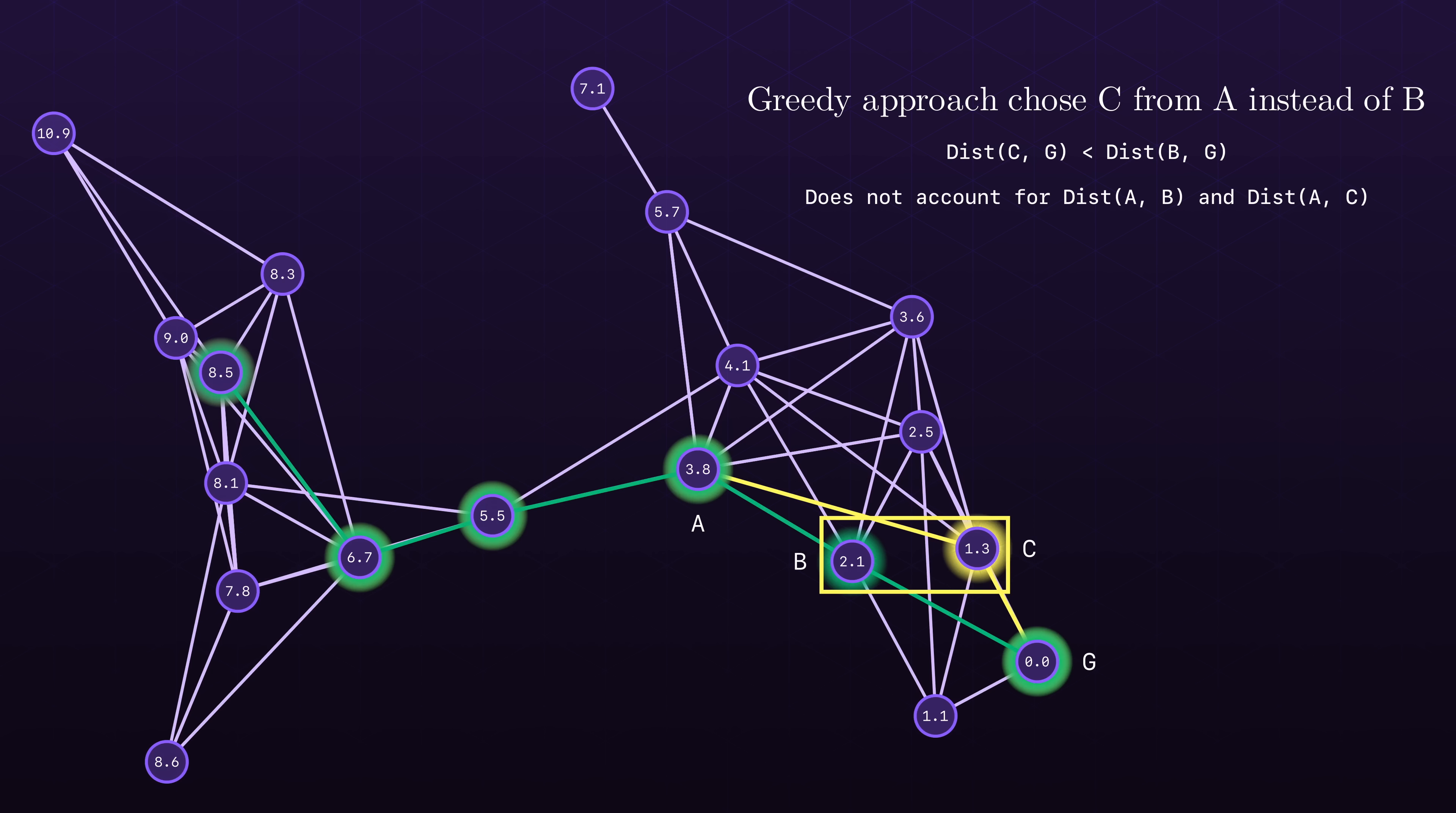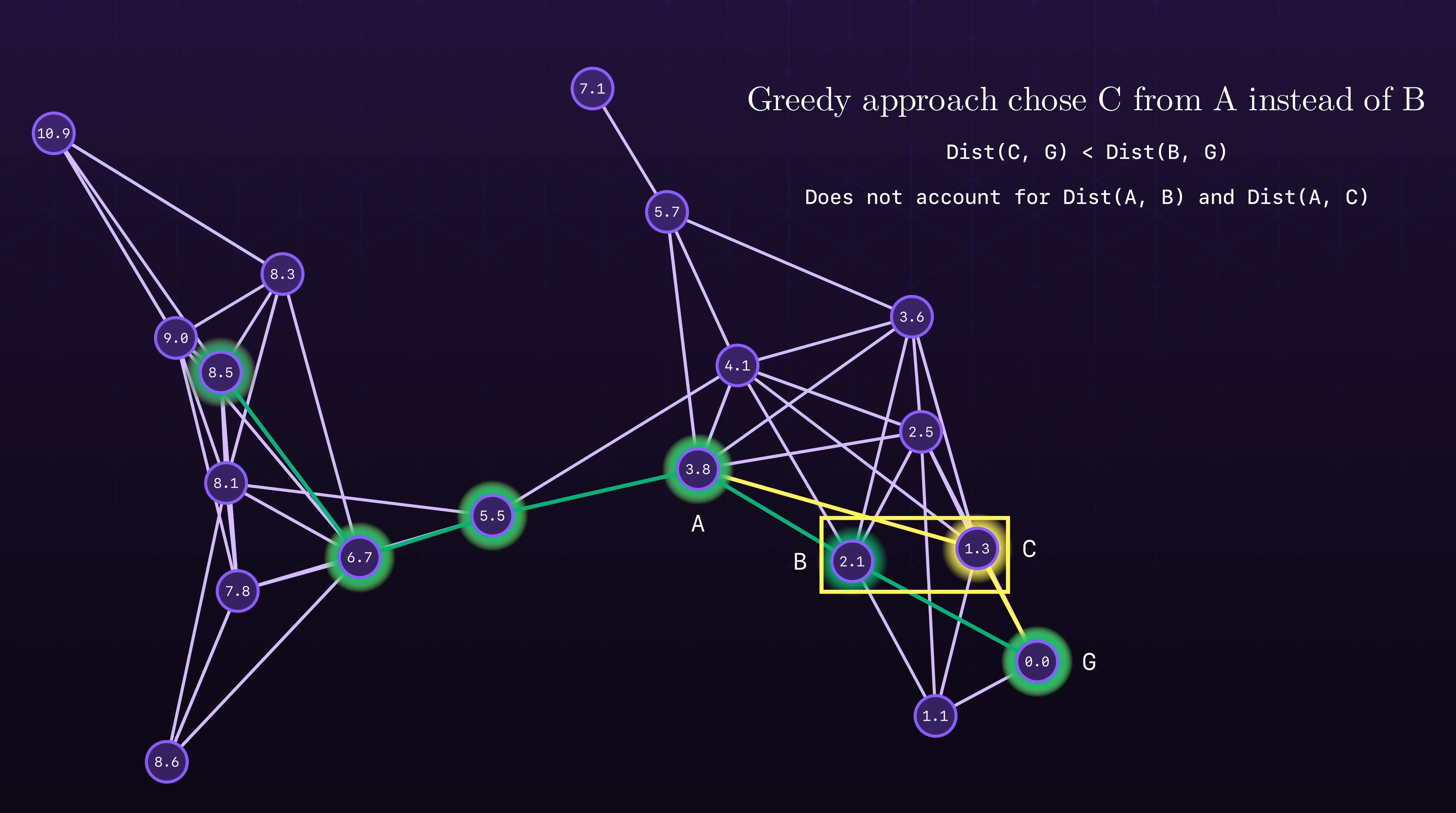Okay, so back to the drawing board. Maybe let's see if we can solve a simpler version of the shortest path problem to get some insight. Suppose we have the following simple graph and we want to start here and get to this goal state.